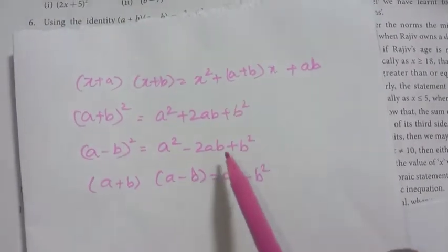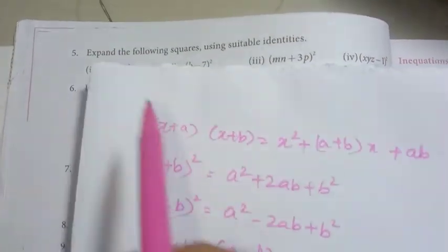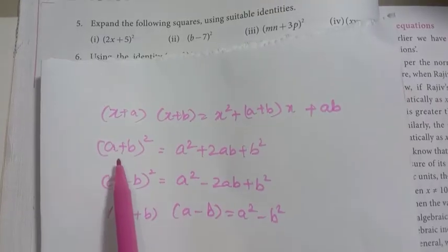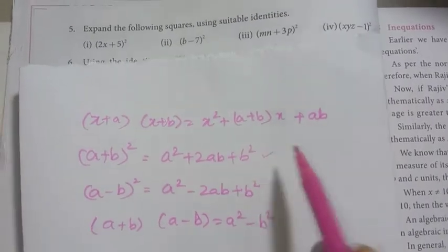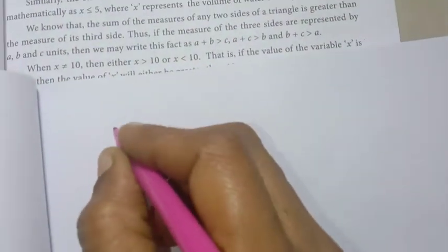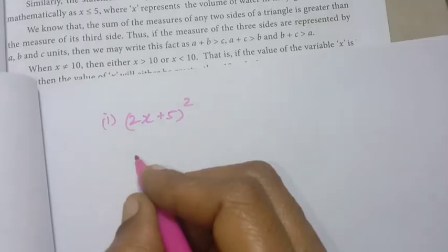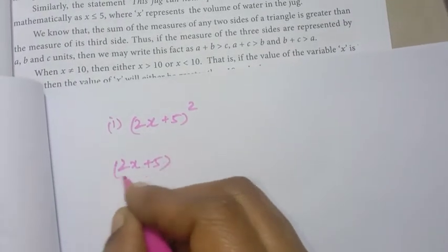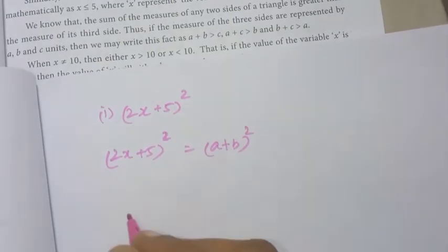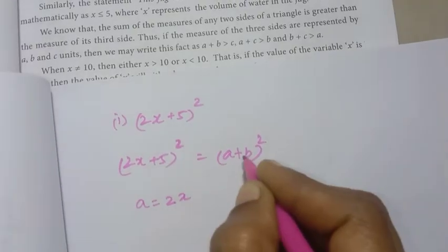You can memorize the four formulas. The next question is 2x plus 5, the whole square. We compare it with the formula a plus b, the whole square. If you memorize this it will be easier. Here a equals 2x and b equals 5.